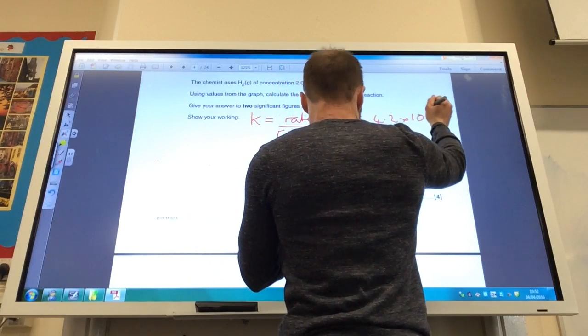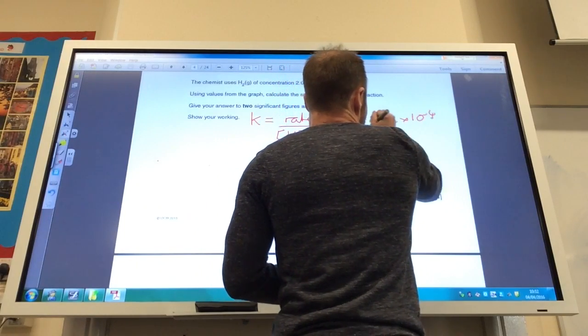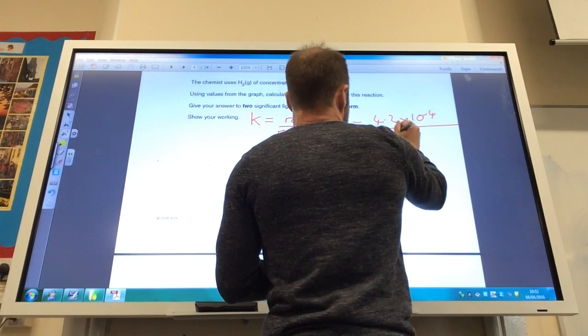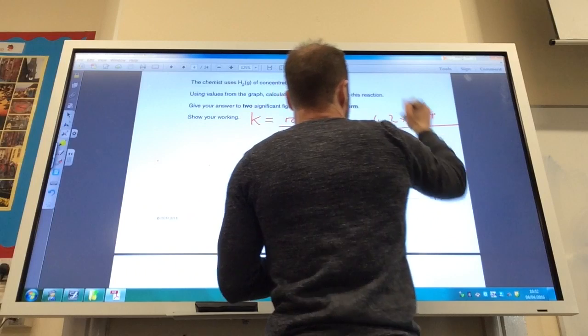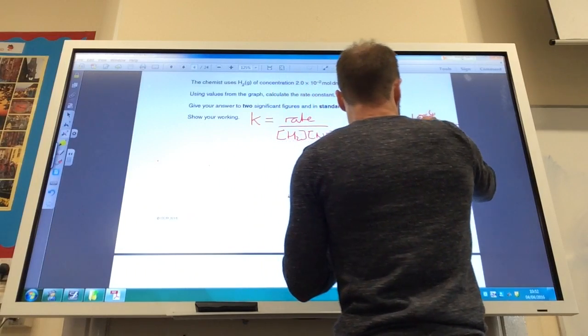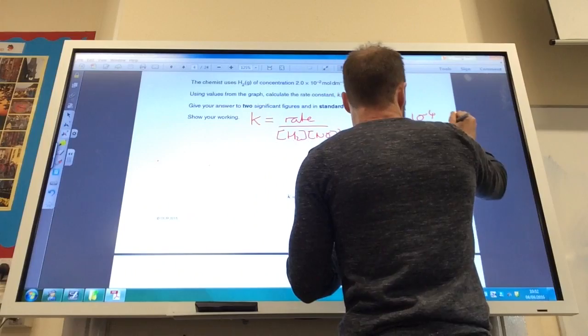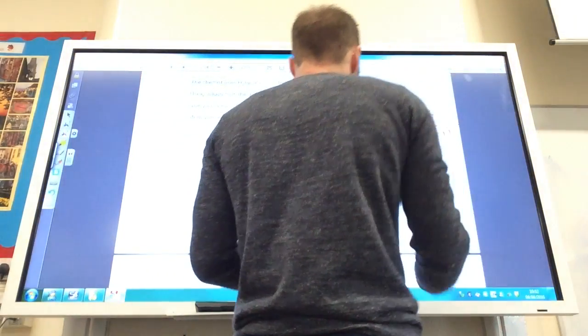So that's 4.2 times 10 to the minus 4, divided by 2 times 10 to the minus 2, which I got from there, times 5 times 10 to the minus 4, which I got from my graph, and that one is of course squared.